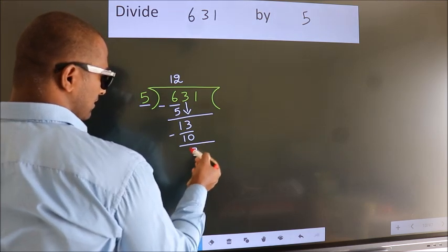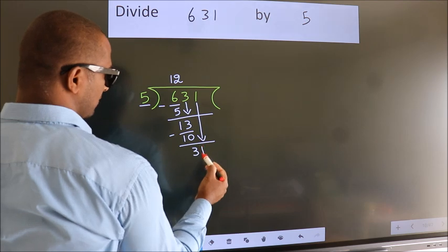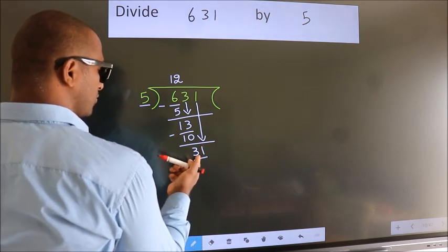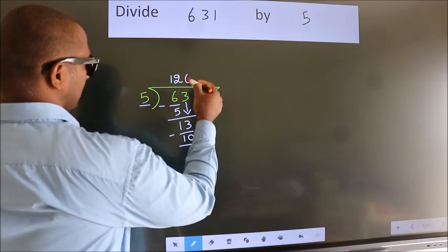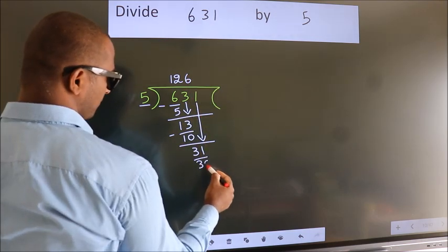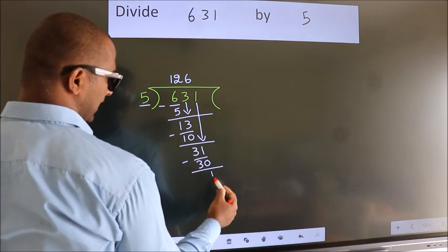After this, bring down the next number. So 1 down, so 31. A number close to 31 in the 5 table is 5 sixes, which is 30. Now we subtract. We get 1.